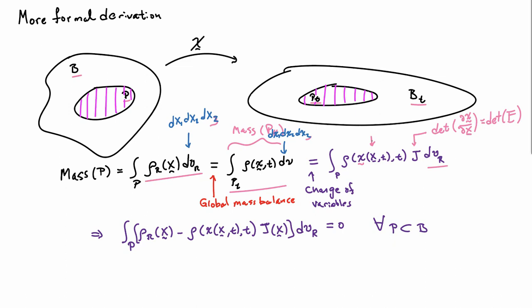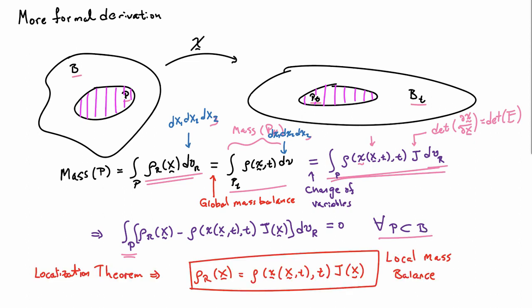So, I can take the third integral here and put it together with the first integral and put them all under one integration over the part P. I'll have the reference density minus the spatial density times the Jacobian equal to zero. And this has to hold for all parts P in the body B. And so, now I can use the localization theorem.